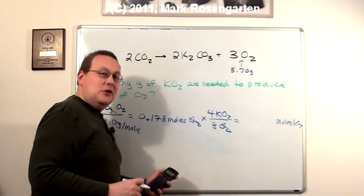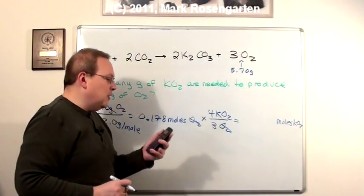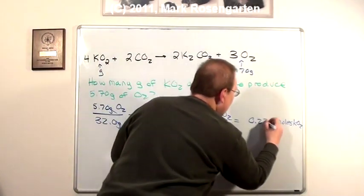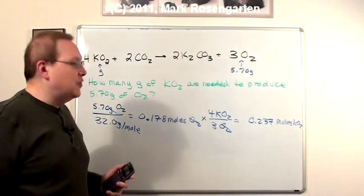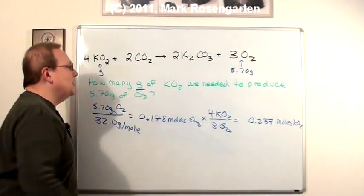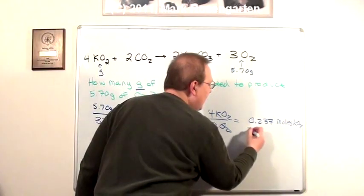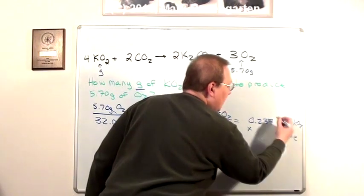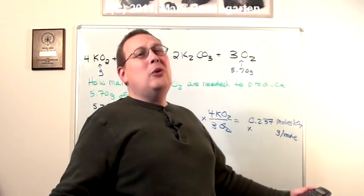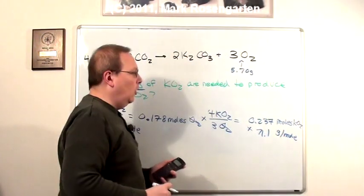And to three significant figures, because these aren't measurements sig figs don't apply, to three significant figures, that's 0.237 moles of K2O2. Okay, now we're trying to find out how many grams of K2O2 that is. So we're going to multiply by the formula mass, which is in grams per mole, so that moles goes bye-bye. Say goodbye to moles, which is 71.1 grams per mole.